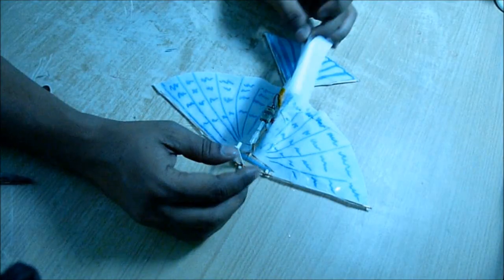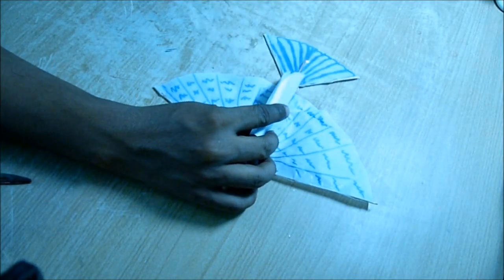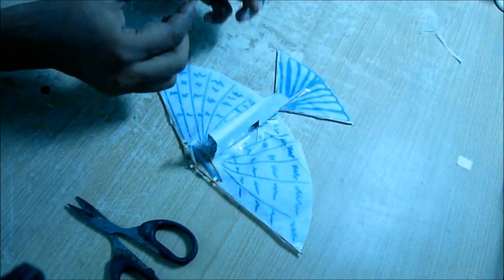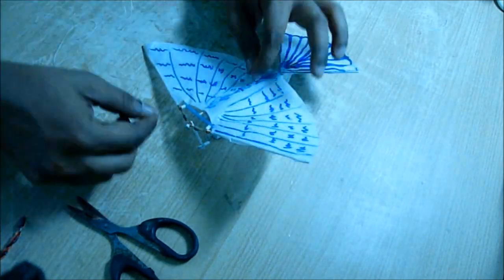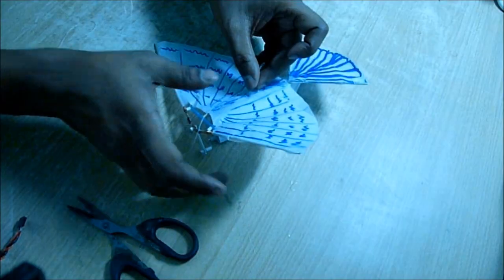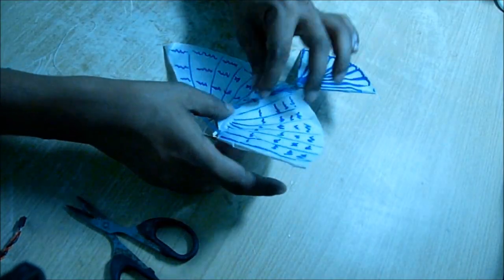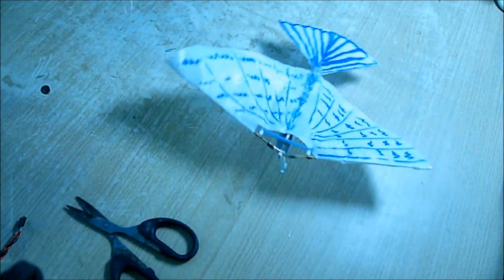Now take a paper and wrap it around the motor and the battery so that nobody can see. On the top, stick a string using cello tape and then see whether it is balancing properly or not.